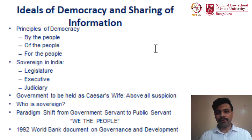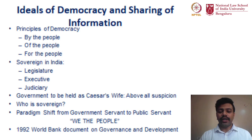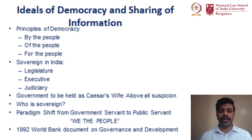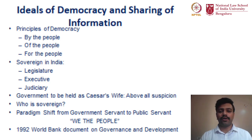A democratic government is differentiated from a totalitarian one in that the will of the aggressor or governor is given prime importance in totalitarianism, whereas in democracy it is the will of the people that gains greater access. In 1992, a World Bank document on Governance and Development suggested that transparency is one of the major requirements for a democratic government. In India, transparency has been held as a key value with the adoption of the Right to Information Act.